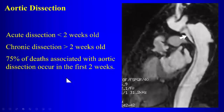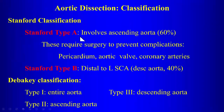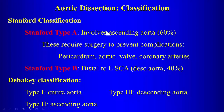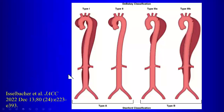In the Stanford classification, type A dissection involves the ascending aorta and requires immediate surgery to prevent complications including tamponade from extension into the pericardium, aortic valve regurgitation from extension to the aortic valve, and myocardial infarction from extension to the coronary arteries — all of which can cause instant death. Type B is distal to the left subclavian artery involving the descending aorta and is treated medically. In the DeBakey classification: type 1 involves the entire aorta, type 2 only the ascending, and type 3 only the descending.